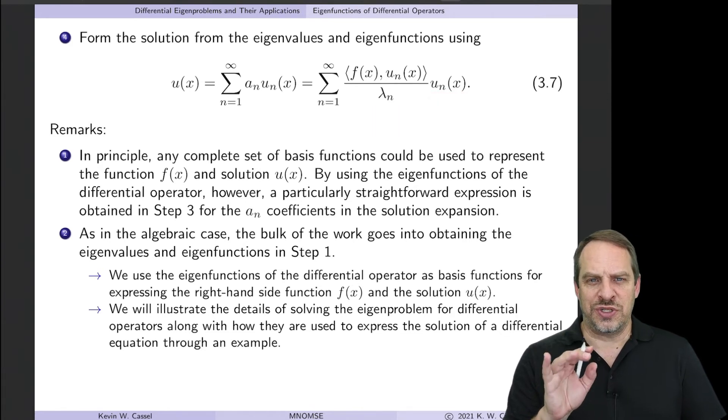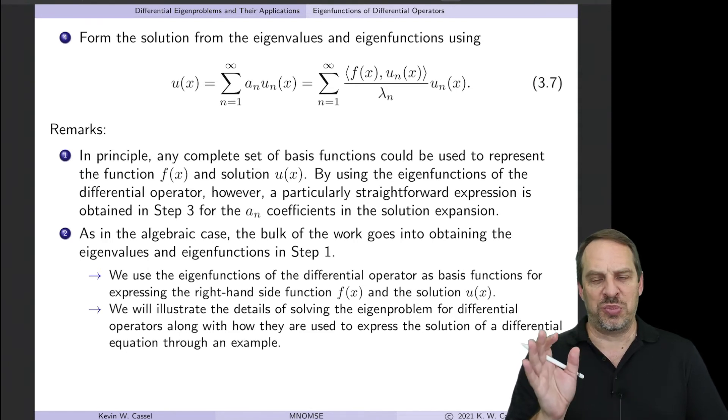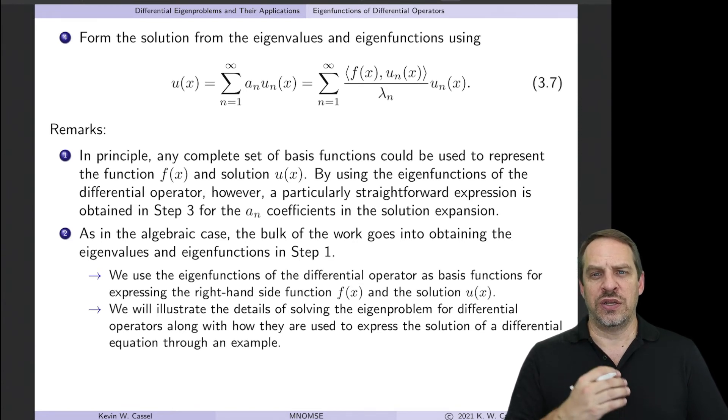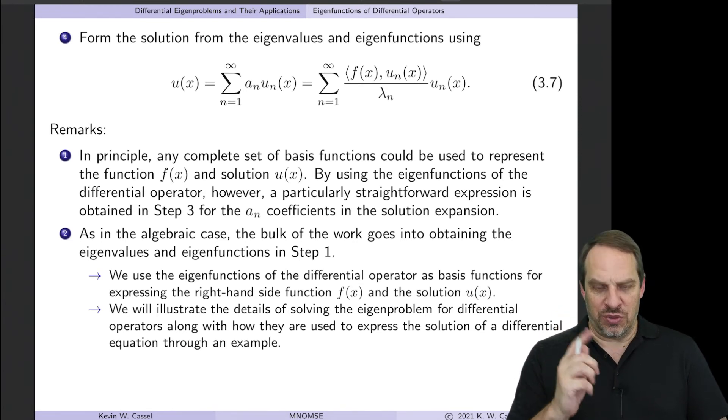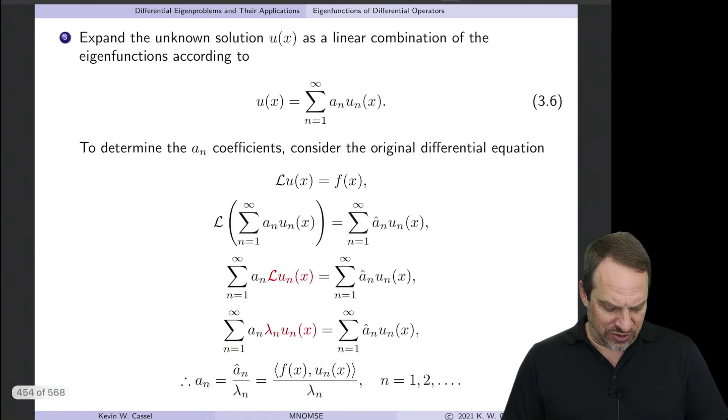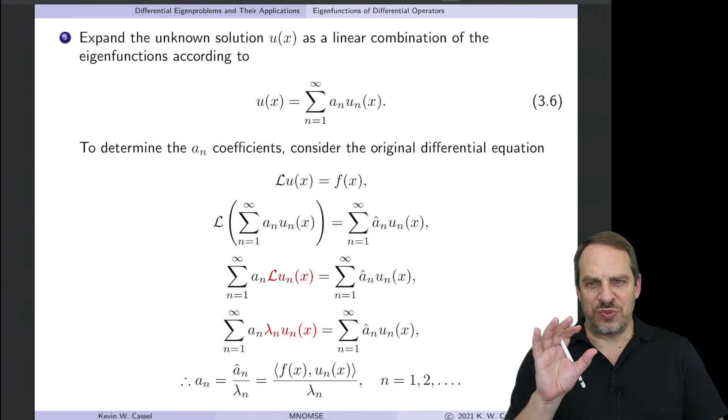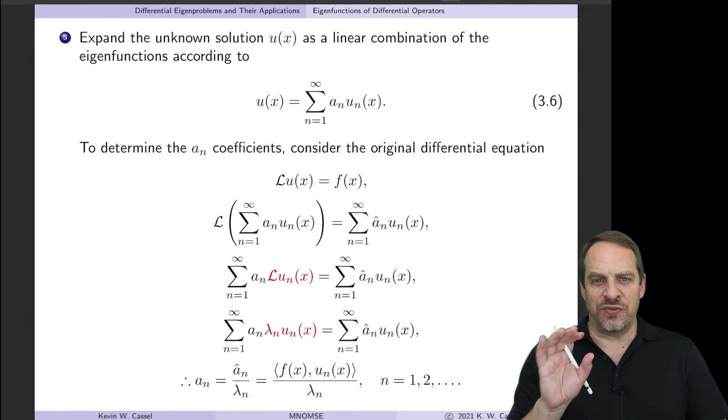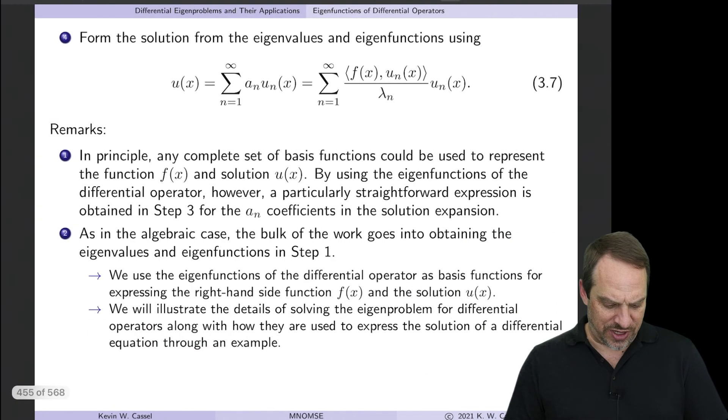Let's take a little bit closer look at what we just did. In principle, you could use any complete set of functions. We could use the Legendre polynomials, for example. We could use a Fourier series, if we'd like, to express F and to express U. But the reason why we use the eigenfunctions was so that this last step worked in this derivation. So that allowed us to go from the differential operator operating on U sub n to setting that equal to lambda sub n U sub n. So it's the special property of the eigenfunctions that allows us to do that. No other set of functions would allow us to make that final step.